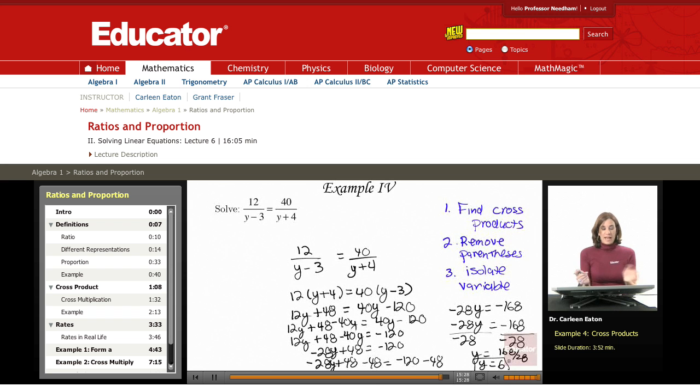So this took a lot of steps, but same basic principles. You start out with your proportion, cross multiply, remove the parentheses, then move all the y's to the left, the terms containing y to the left, the numerical terms to the right. Isolate the variable by using addition, subtraction, division, multiplication, all the usual, and then simplify and it comes out to y equals 6.